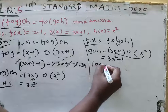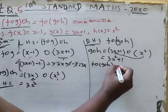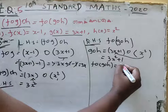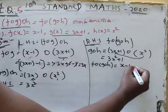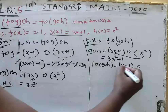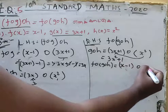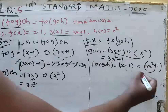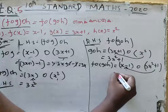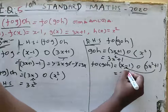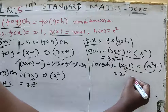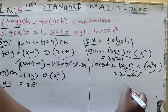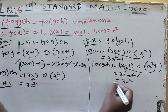Now f of g of h can be done. We have f of x minus 1, and we substitute g of h which is 3x squared plus 1. Using the substitution formula: 3x squared plus 1 minus 1, and the plus 1 minus 1 cancel, leaving 3x squared.